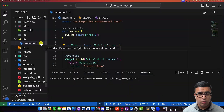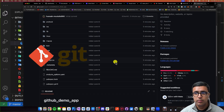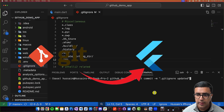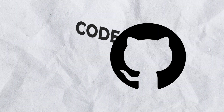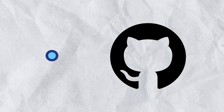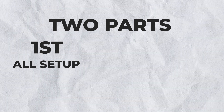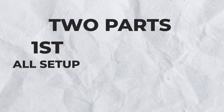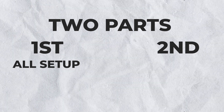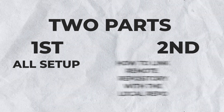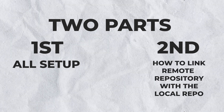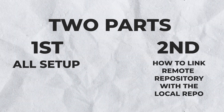In today's video, I'm going to be showing you guys how to integrate the Git version control management system within your Flutter application and use GitHub to actually store your code on a remote repository and share your work with the world. This tutorial is going to be divided into two parts. The first part is going to focus on all of the setup that we need to do on our local machine just to get Git up and running. And then we're also going to be taking a look at what we have to do to link our remote repository with the local repo that we have on our system.